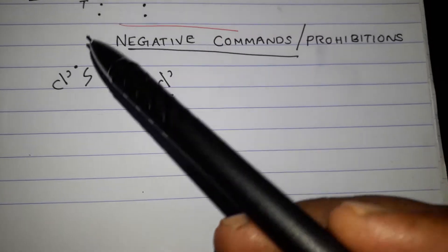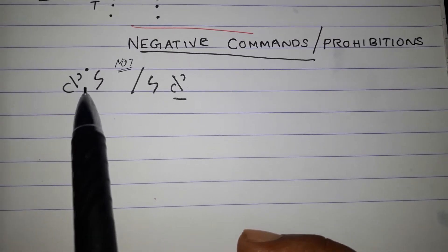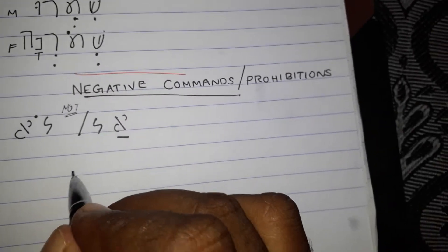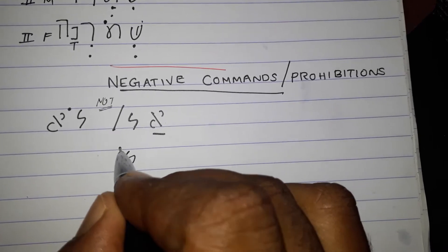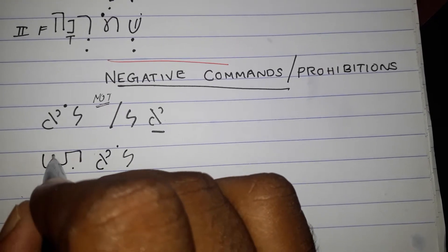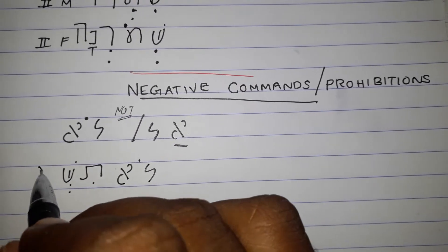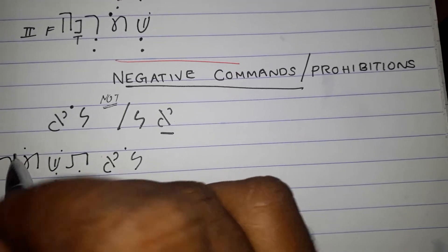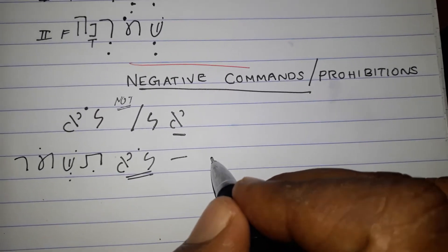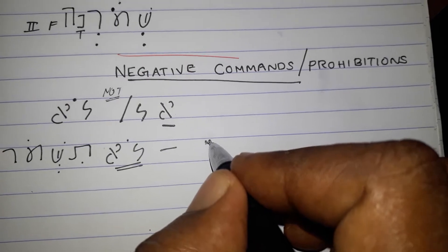'Lo' is used for permanent prohibition — that is, 'you shall not,' kept forever. For example, 'lo tishmoor' — 'lo' is added, making it a permanent prohibition, meaning 'thou shalt not keep.'